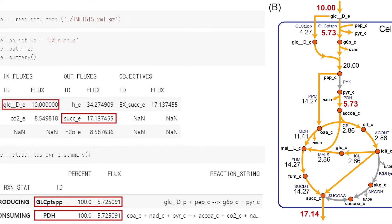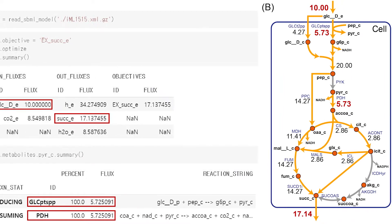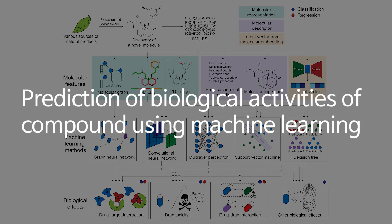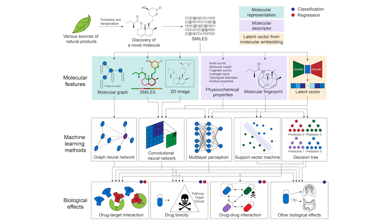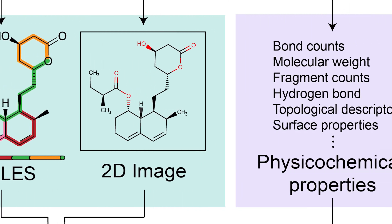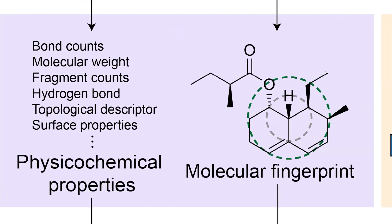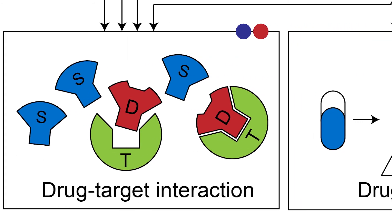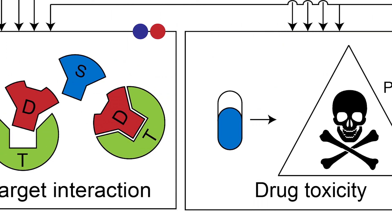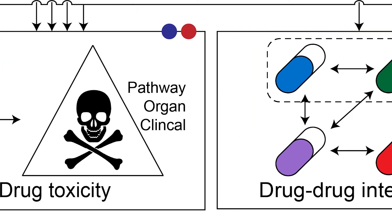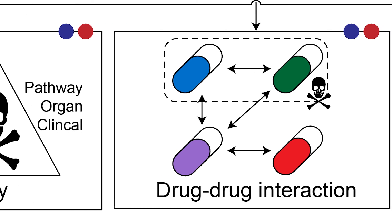Our lab's second topic is the prediction of biological activities of compounds using machine learning. Although machine learning was developed around image and translation technology, once chemical structural information is processed into a form that machine learning can understand, it's possible to predict various biological activities. Typical examples of predictions include which proteins a given chemical structure will interact with, drug toxicity, and drug interactions.